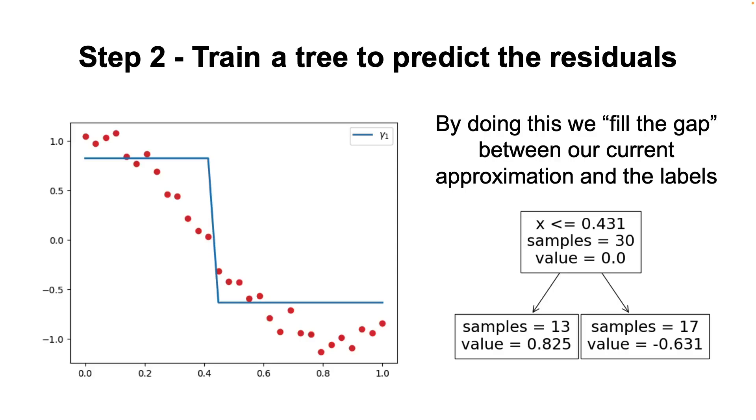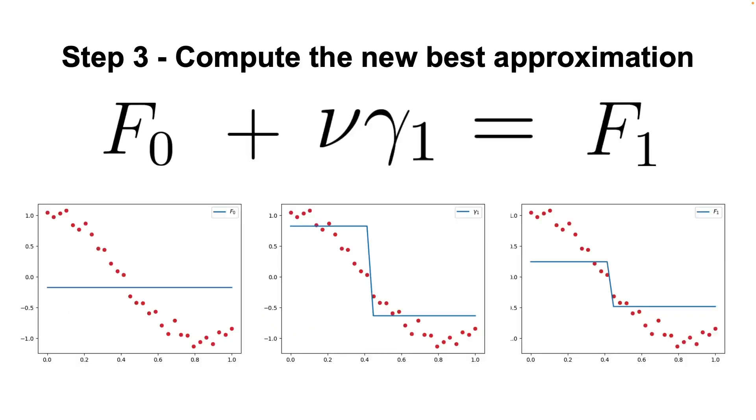The predictions of the regression tree are denoted, in general, as gamma. Finally, we update our approximation f0 by adding the predictions of the newly trained weak learner, that is multiplied by a learning rate denoted as the Greek letter nu, in this case, and thus obtaining the next approximation f1.